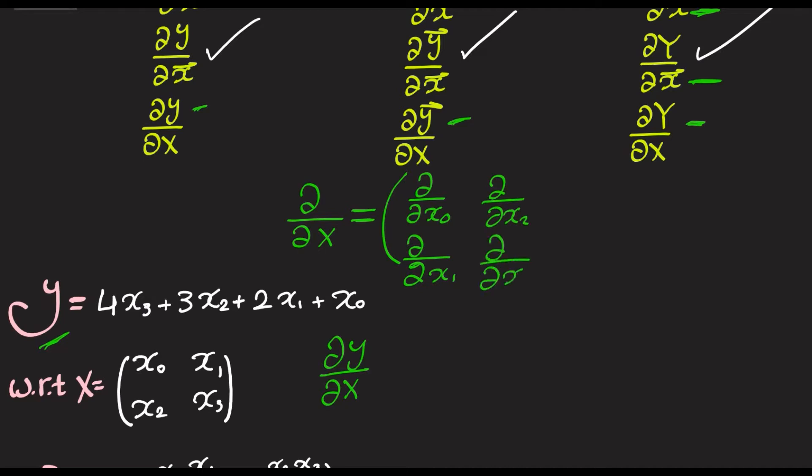Okay, since we're done with that, all we do is basically Kronecker product between this and our function y. Here, y is a scalar, so basically, we've got four spots. Here, differentiate with respect to x0, here x2, and here x1, and here x3.